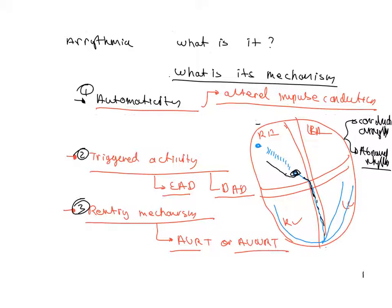So let us start. What is an arrhythmia? It's a complex answer, but I'll try to simplify. Basically, the rhythm of the heart is normally generated and regulated by the pacemaker cells within the SA node, which is located within the wall of the right atrium. SA node pacemaker activity normally governs the rhythm of the atria and the ventricles — it controls the rhythm of both.